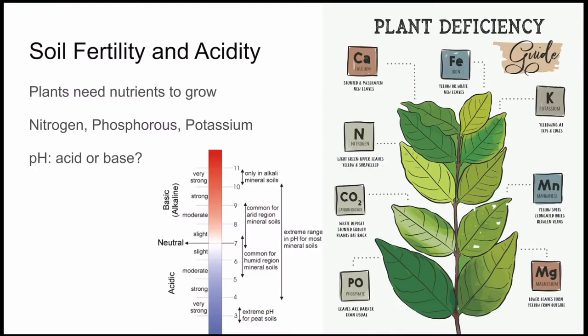Soil has a couple other properties that we're interested in too. First of all, its fertility — the soil fertility is its ability to hold nutrients. This property comes from the parent rock and the humus. What those were each composed of will tell you which minerals plants will have available to them. Plants care about having three main minerals: nitrogen, phosphorus, and potassium. These will be in a lot of potting soils you'll find, although they need other different minerals too, like calcium, iron, and manganese, as we see here. This guide will help you determine what your plant might be lacking if you can notice what might be wrong with it.